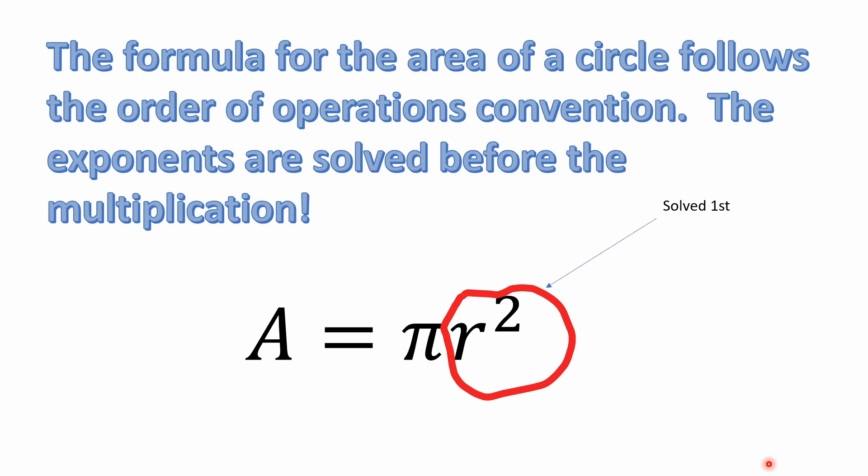The formula for the area of a circle follows the order of operations convention. R squared means 2 is an exponent of R, so you do exponents first — solve R squared — and then multiply that result by pi. That's how that works.